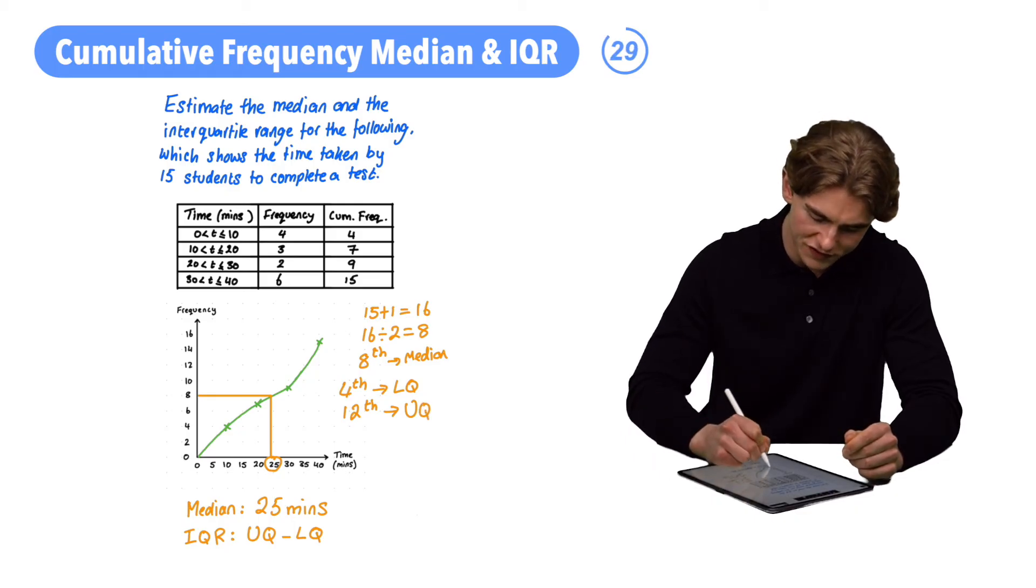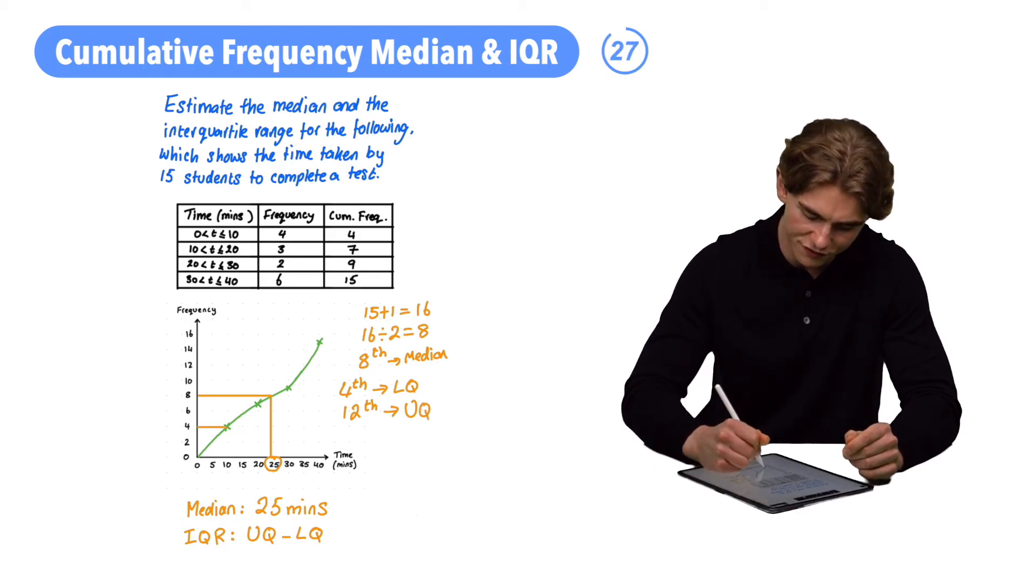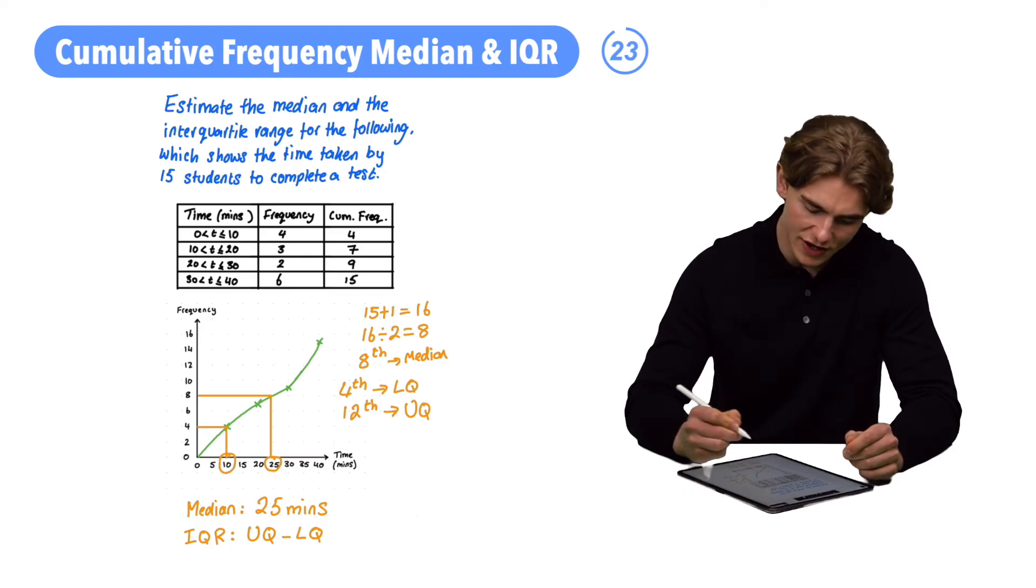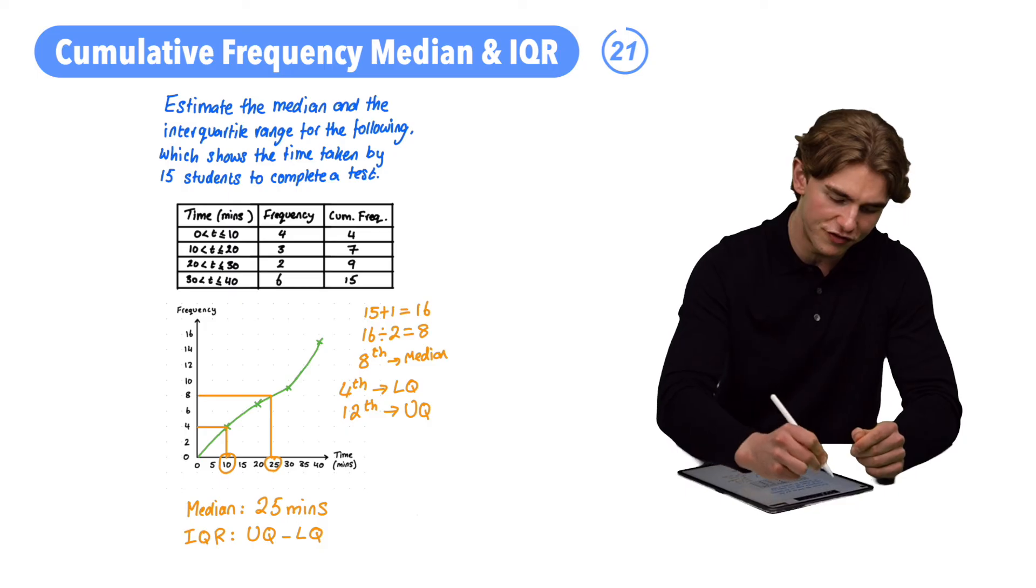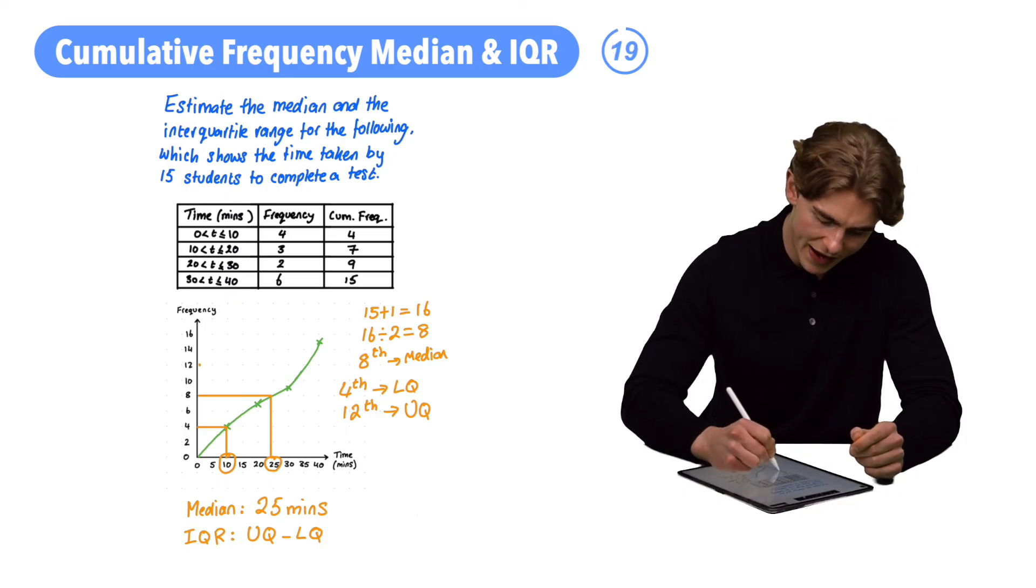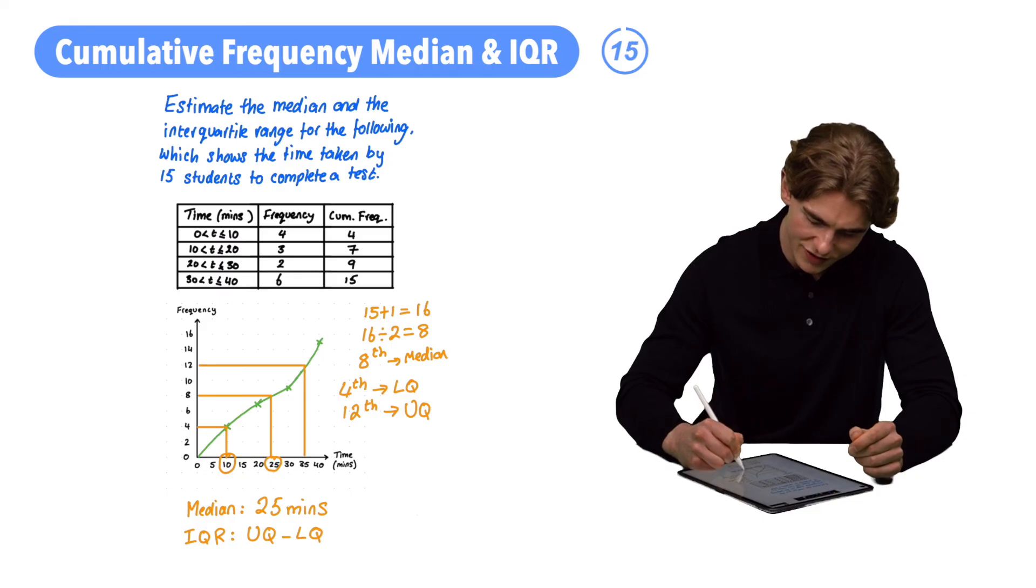So finding our 4th value, what's it going to be? Drawing across from our frequency of 4 and down. We're going to have a time of 10 minutes. Doing the same with 12 then. Drawing over from our frequency. Let me go back to my orange pen there. Drawing across from a frequency of 12 and down to our time and we can see that it's associated with 35 minutes.